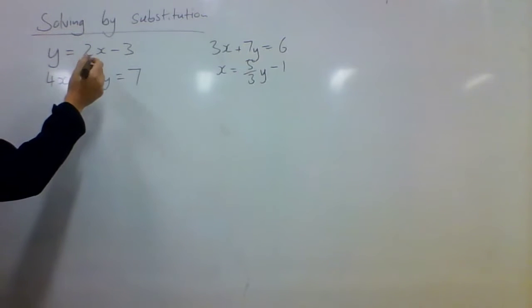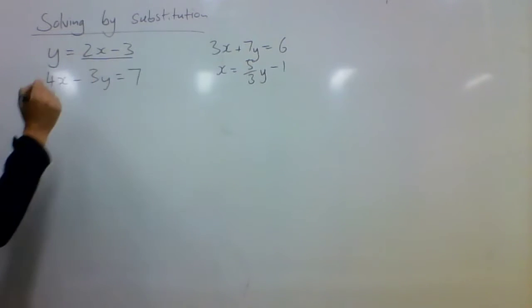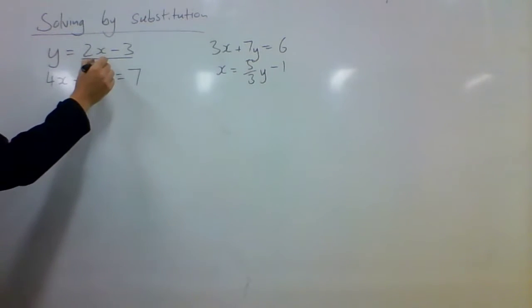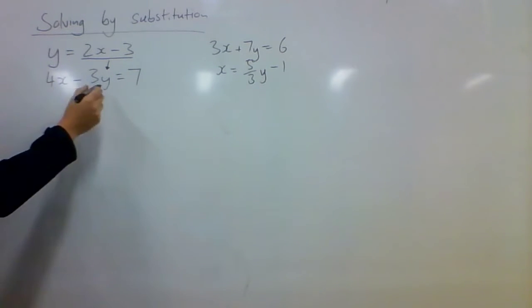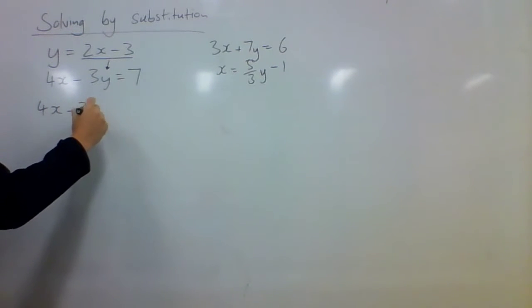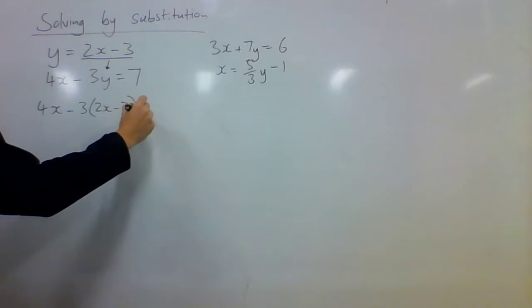I can see that y is 2x take 3. So why don't I get all of that and put it down into that y there. So if I do that and rewrite this bottom equation, I would get 4x minus 3 times 2x take 3 being equal to 7.